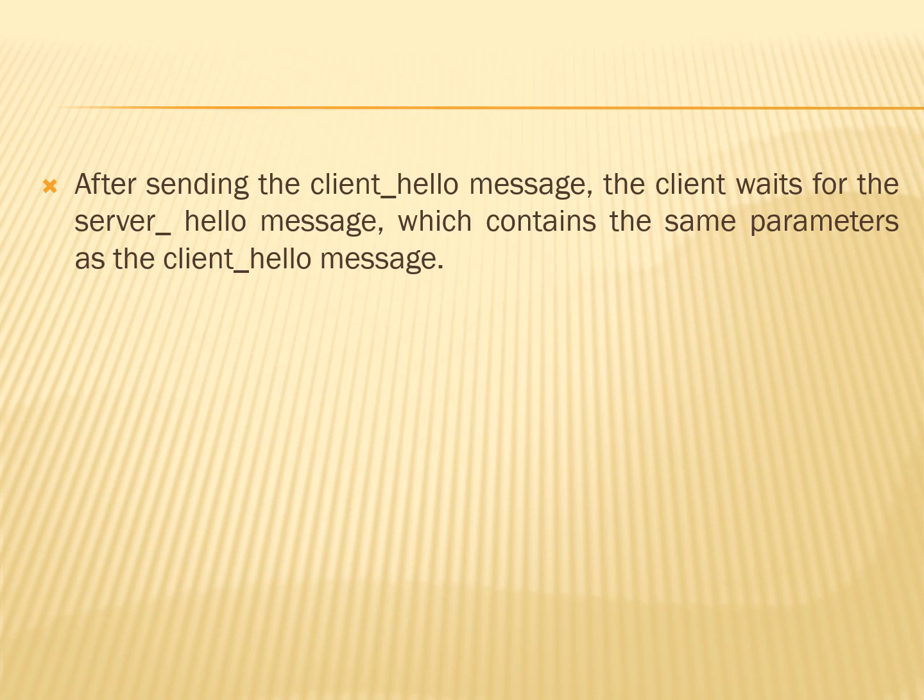The next parameter is called session ID. This is a variable-length session identifier. A non-zero value indicates that the client wishes to update the parameters of an existing connection or to create a new connection on this session. A zero value indicates that the client wishes to establish a new connection on a new session. The next parameter is called cipher suite — this is a list that contains combinations of cryptographic algorithms supported by the client in decreasing order of preference. Each element of the list defines both a key exchange algorithm and a cipher suite, discussed separately.